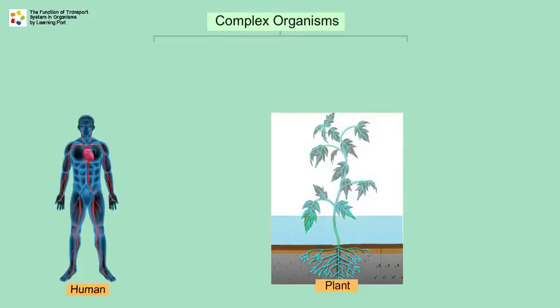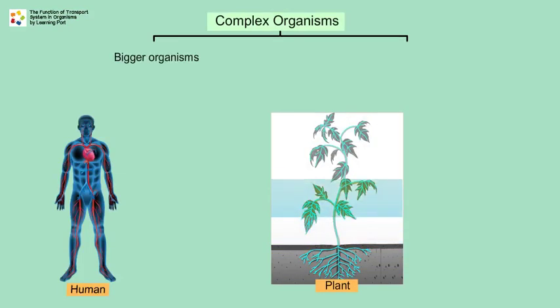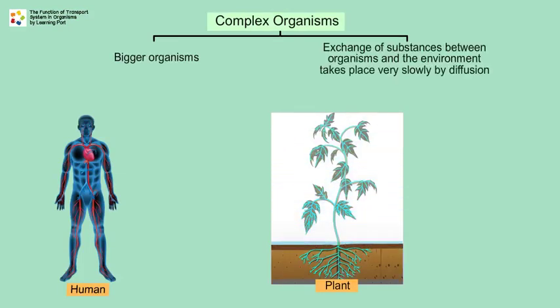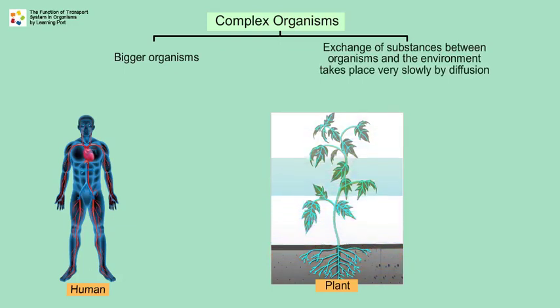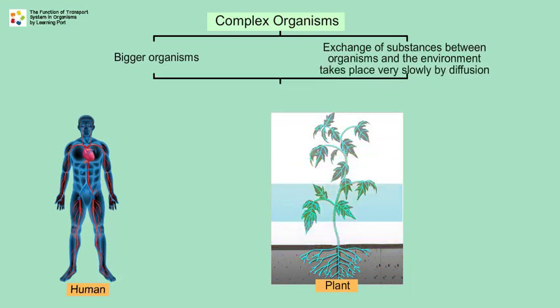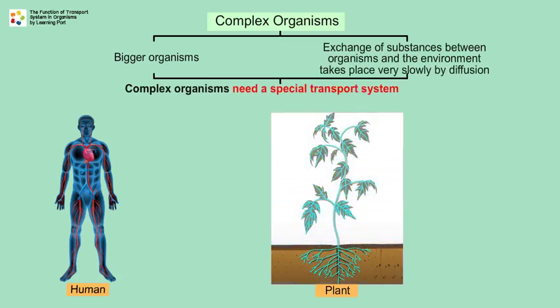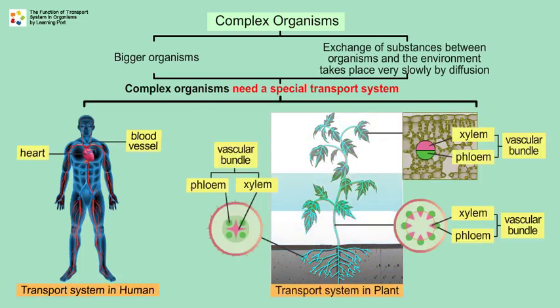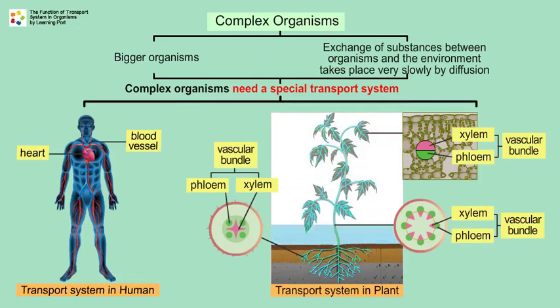Complex organisms such as humans and plants are bigger organisms, and the exchange of substances between organisms and the environment takes place very slowly by diffusion. To overcome this problem, complex organisms need a special transport system to transport oxygen and nutrients to all the cells, and to remove carbon dioxide and other waste products from the cells.